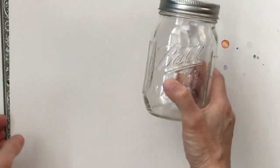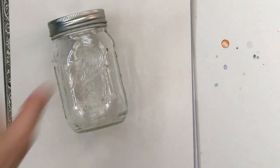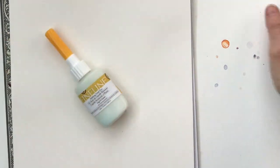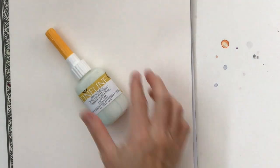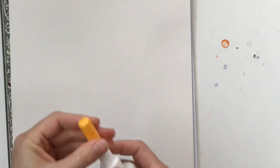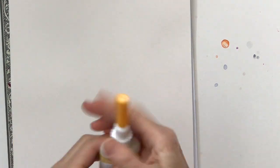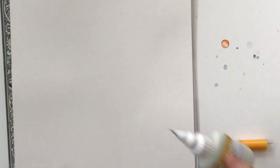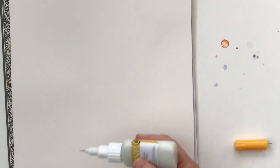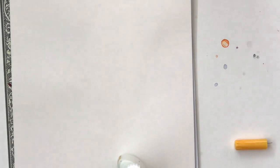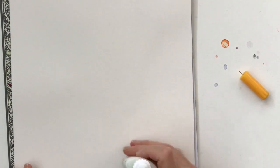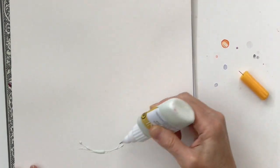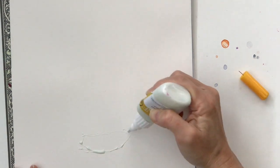Today for my watercolor video I am doing something a little bit different. I am going to do kind of a reverse or negative image using frisket liquid that comes in a pen, and you could use frisket liquid that comes in a jar.